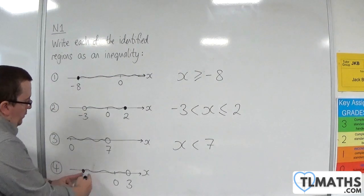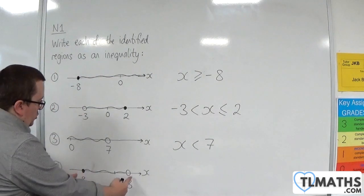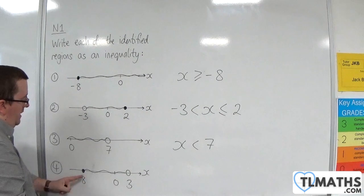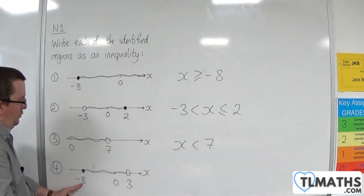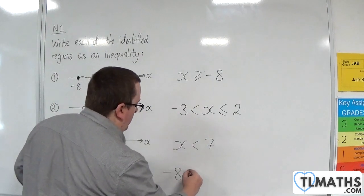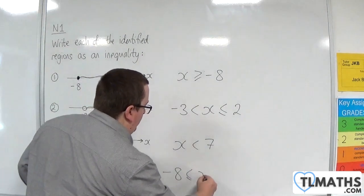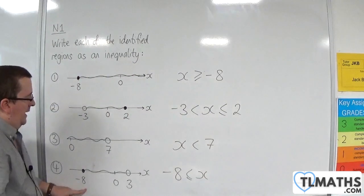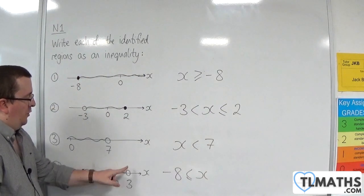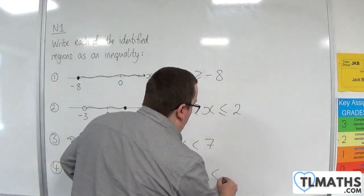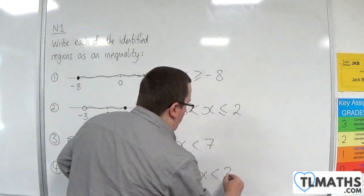And then for the fourth one, we've got the region between minus 8 and 3. We're including minus 8, so minus 8 is less than or equal to x. And we're not including 3, so it's less than 3. So: -8 ≤ x < 3.